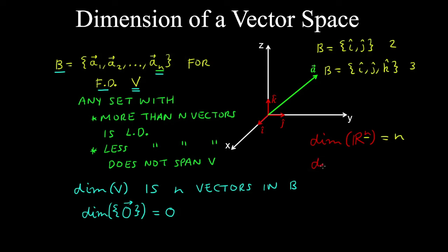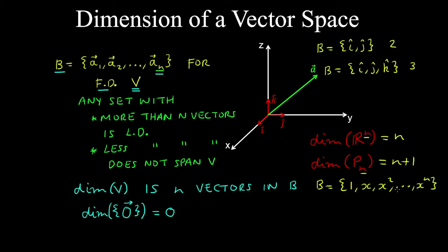The dimension of the vector space of polynomials with degree less than or equal to n is equal to n plus 1. The standard basis for P_n has the following vectors: 1, x, x squared, up to x to the n — so we have n plus 1 vectors forming the standard basis.